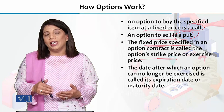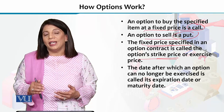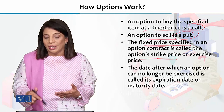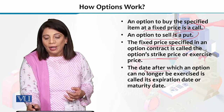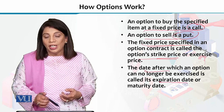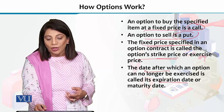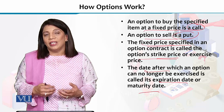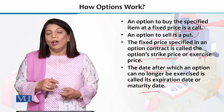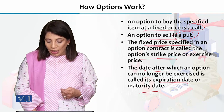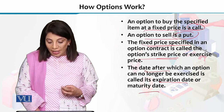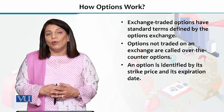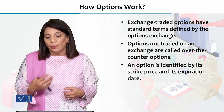Us keemat ko hum option ki strike price ya exercise price kehte hain. Aur woh date jiske upar jaake aap finalize kar sakte hain — choice hai aapke paas, aap us particular instrument ko khareed sakte hain, bech sakte hain — us particular date ko hum expiration date bolte hain. So there is expiration date aur maturity date jinka aapko pehle se pata hona chahiye agar aap option mein koi business karna chahte hain. Aur doosri eham baat hai uska exercise ya strike price, that needs to be decided between the parties interested in going for the call or put options.